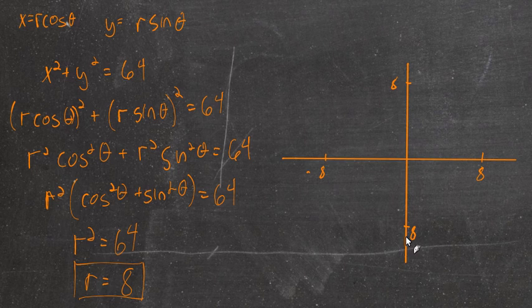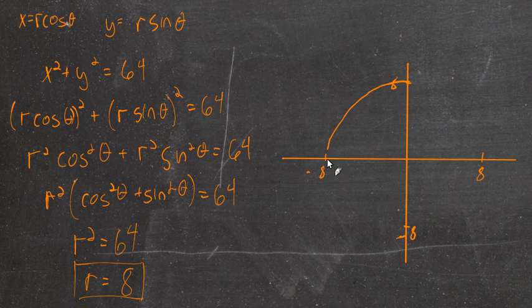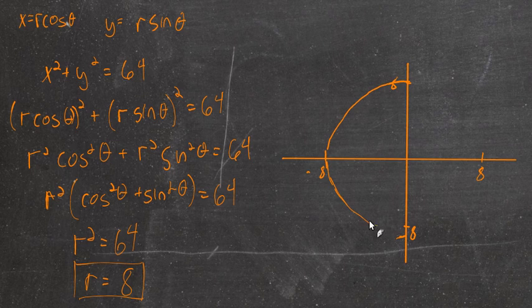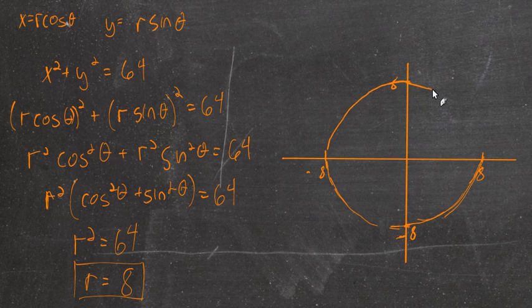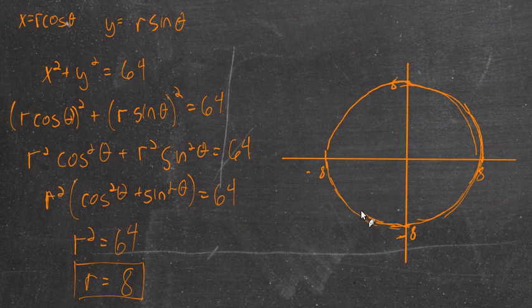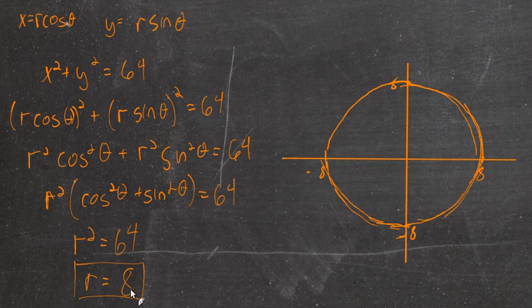And we see that no matter where we are, no matter where θ is or what θ is, we're just going to draw a graph where the radius of the distance from the pole is always 8. So in polar form, that's the equation for a circle. Much easier. r is just 8.